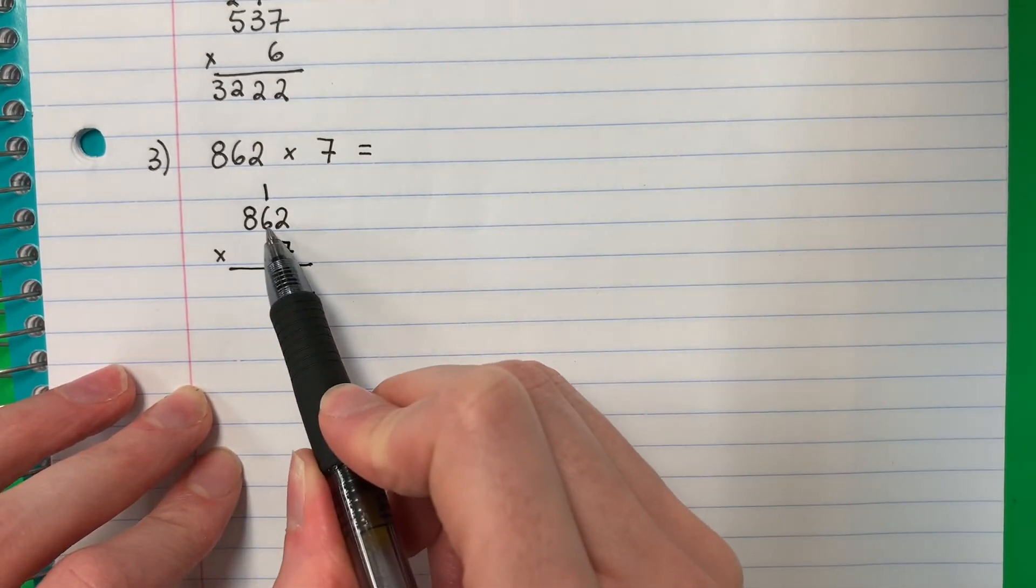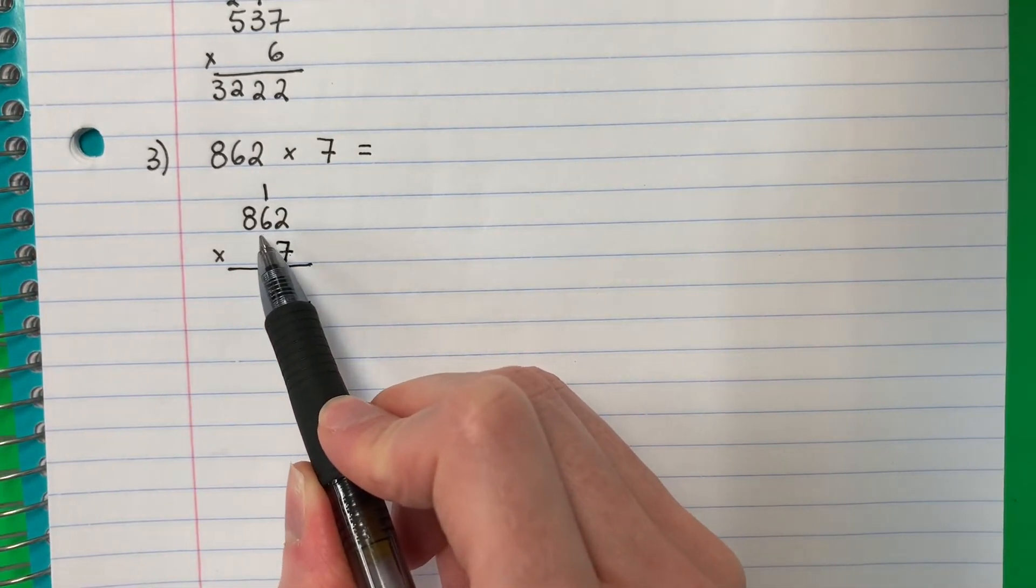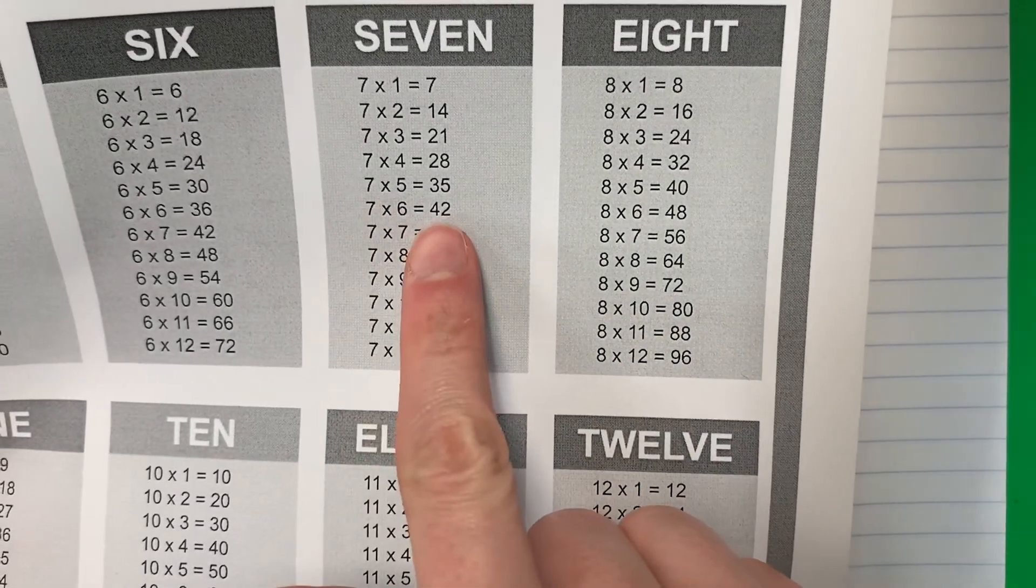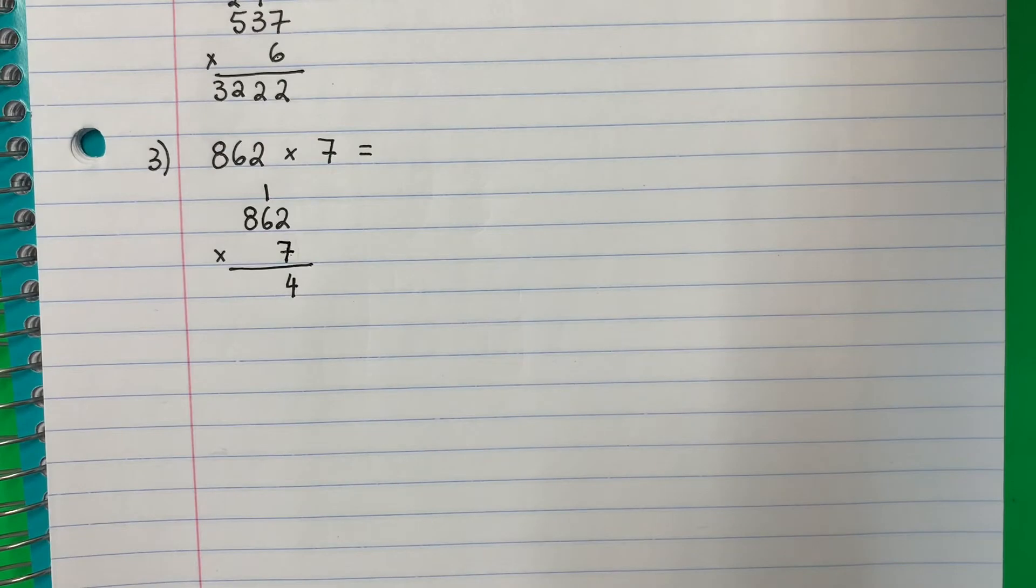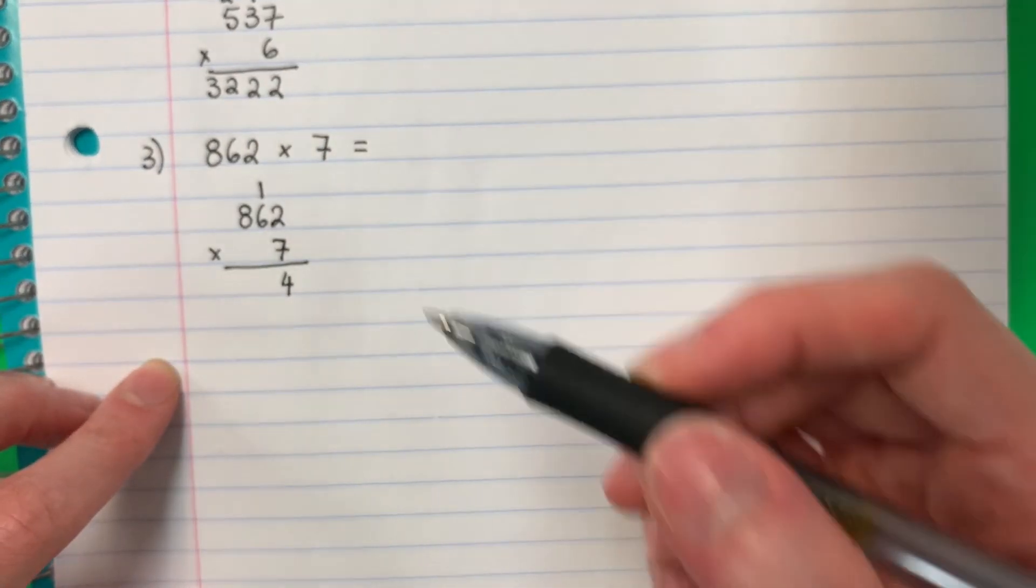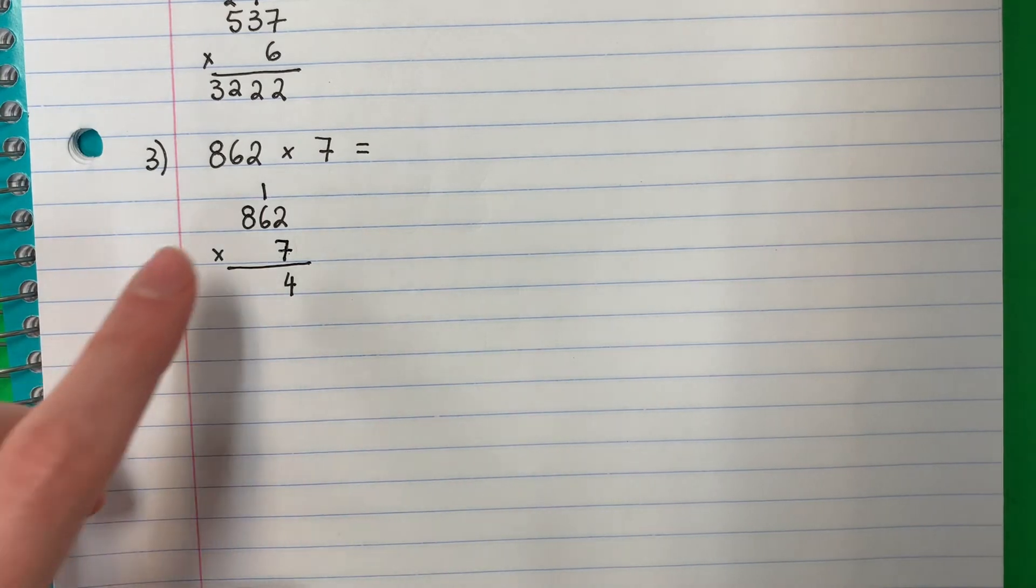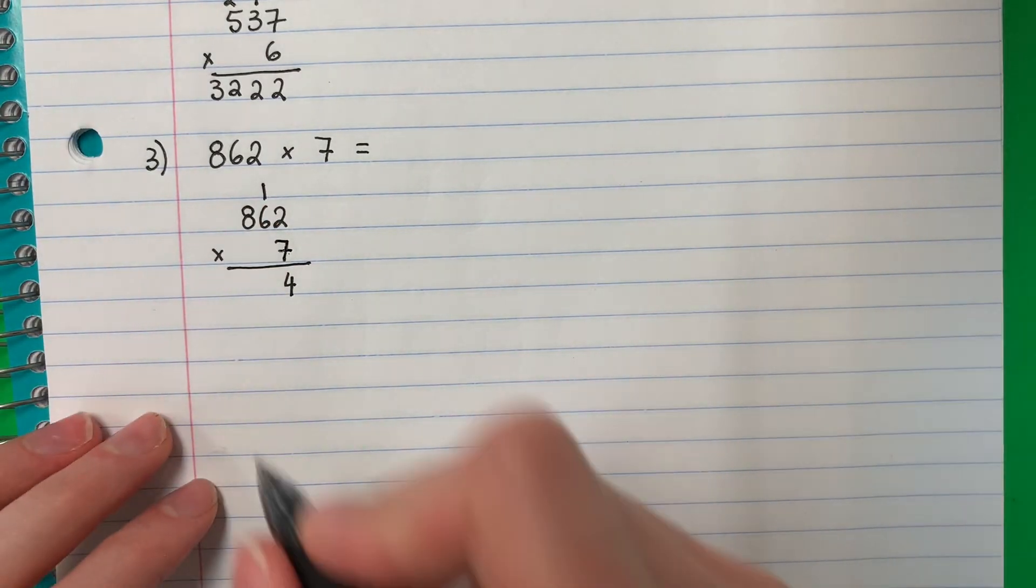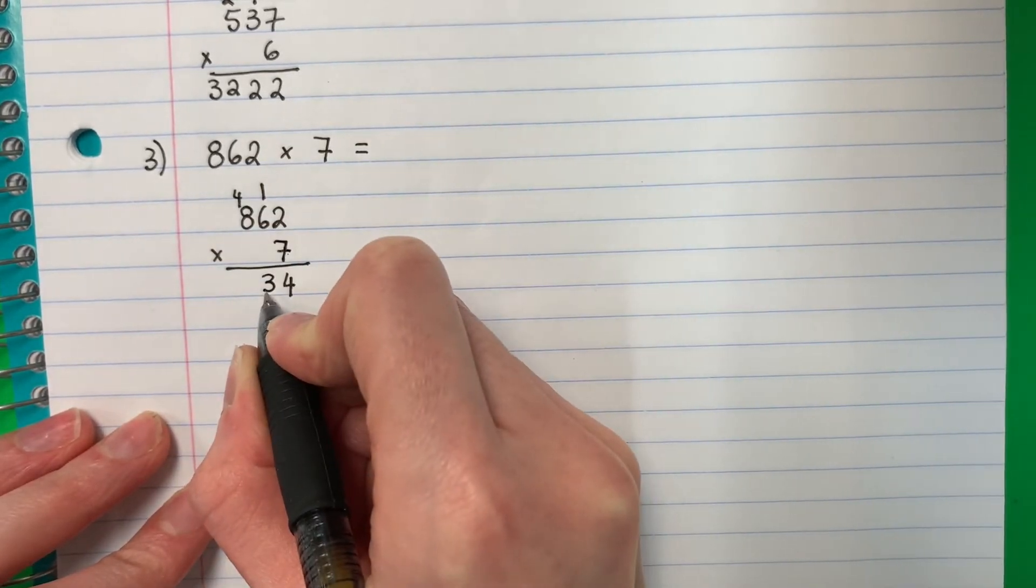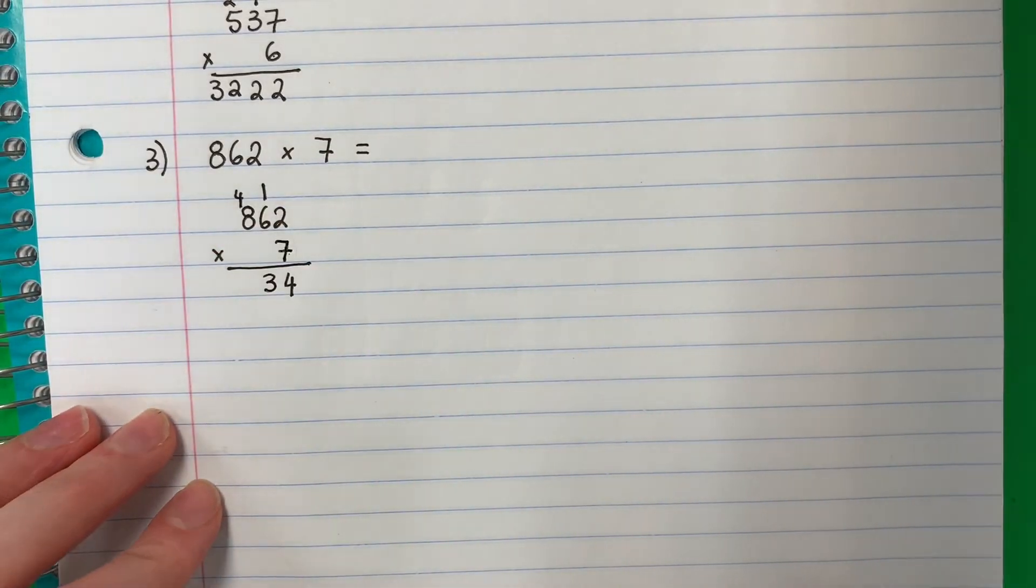Now we're going to do seven times six. Siete por seis. Seven times six is 42. Cuarenta y dos. Forty-two. And then I have a one. Cuarenta y dos, pero tengo uno. So 42 plus one. Cuarenta y dos más uno. Forty-three. Cuarenta y tres. You put the three here and the four here. Pongo el tres allí. El cuatro allí. Okay.